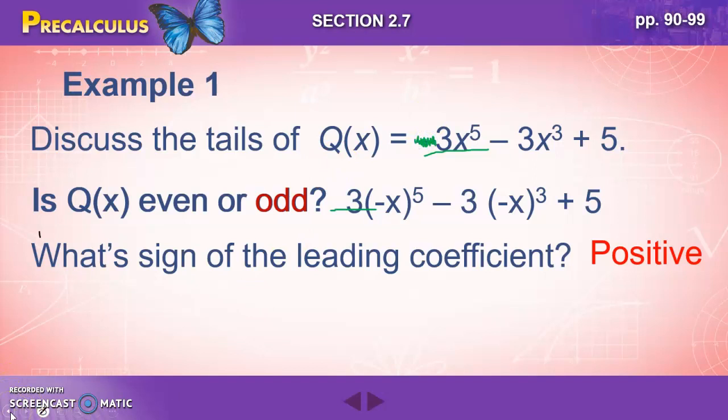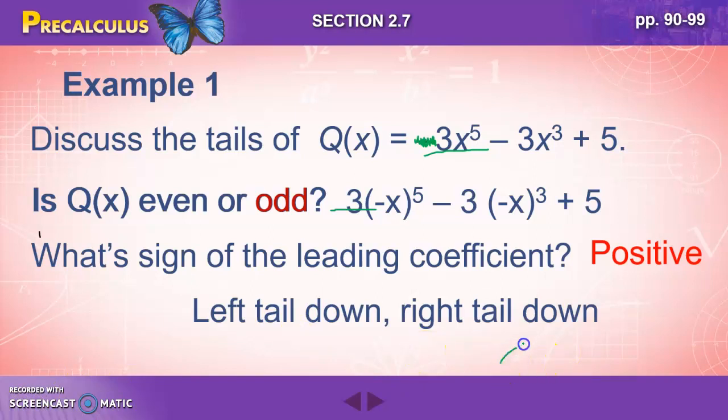But when we read it a second time, we had a positive 3. And when you have a positive coefficient with an odd number, that's going to be left tail down.